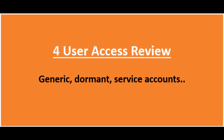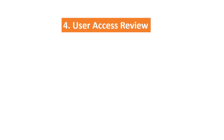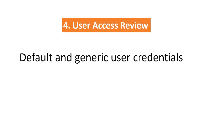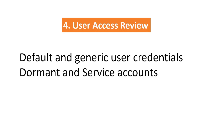Point number four, user access reviews. Make sure user access reviews are performed regularly. Check and verify that generic users are either renamed or disabled, default users and passwords are changed, dormant accounts are deleted or disabled, and service accounts are configured to run in batch or program-to-program calls. Ensure that no service accounts are able to log in interactively.